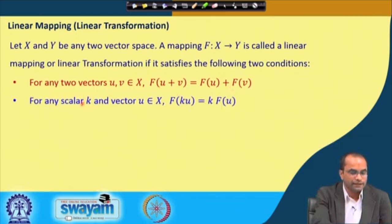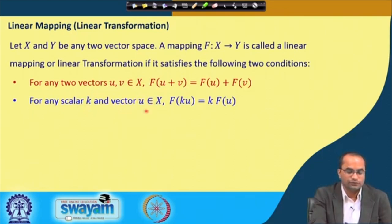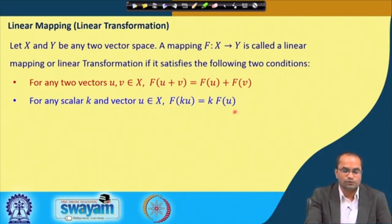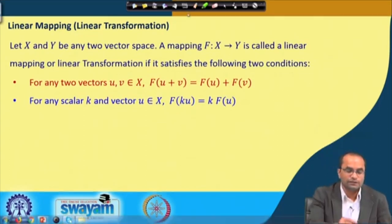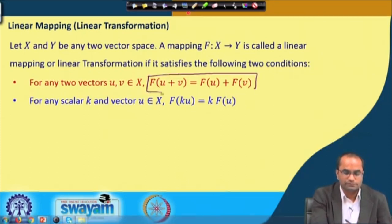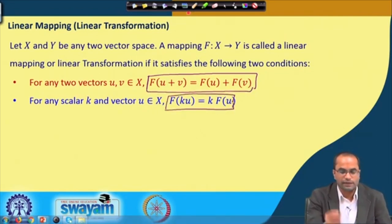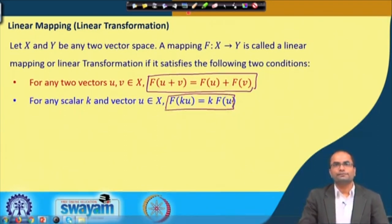The second condition: for any scalar k from the set of real numbers and any vector u from X, this F should also satisfy that F(k·u) should be equal to k times F(u). So we have these two conditions required for linearity: F(u+v) must equal F(u)+F(v), and F(k·u) must equal k·F(u).